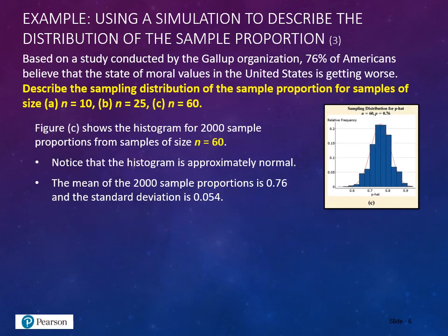Figure C shows the histogram for 2,000 sample proportions when we increase the sample size to 60. Here we notice that the histogram is now approximately normal. The mean is 0.76, and the standard deviation is 0.054.